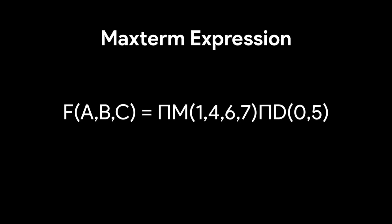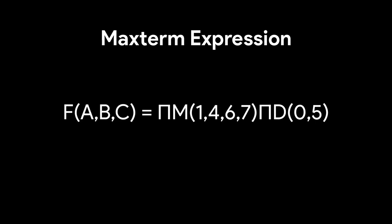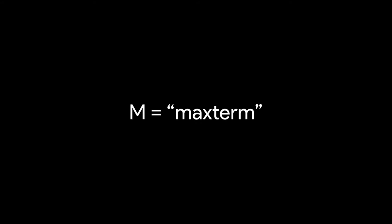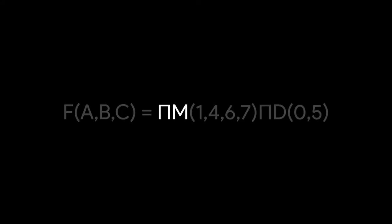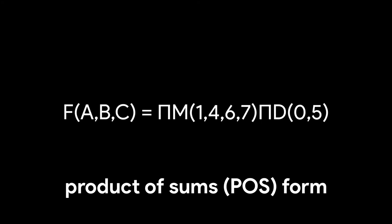A max-term expression uses a capital Greek letter pi, and then a capital M, and possibly a capital D. Pi is used to represent taking a product. The capital M stands for max-terms, and a capital D, if present, stands for don't care terms. Pi M can be read as product of max-terms, which is the format for a product of sums expression.